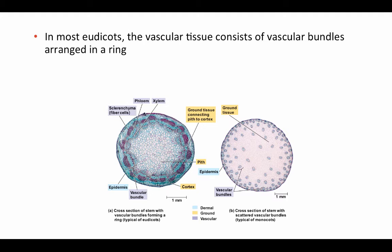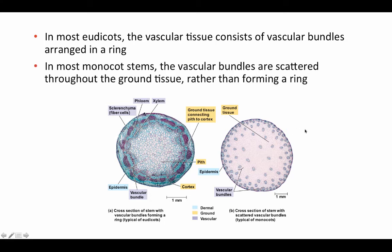In shoots we see another major difference between eudicots and monocots. In eudicots, the vascular tissue consists of vascular bundles arranged in a ring — different from the root arrangement. In the shoot vascular bundle, xylem is to the interior and phloem is just outside it, with sclerenchyma fiber cells helping support the stem. Xylem and phloem together are called the vascular bundle. In most monocot stems, vascular bundles are scattered throughout the ground tissue rather than forming an organized ring, found mostly toward the outside.